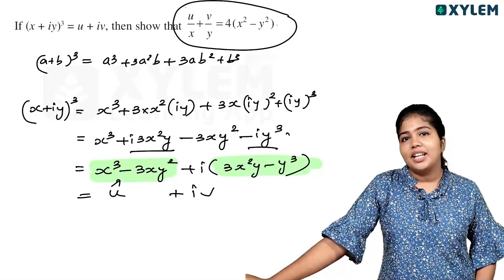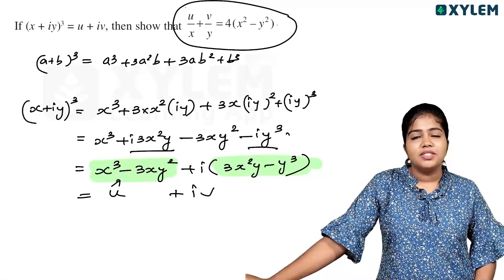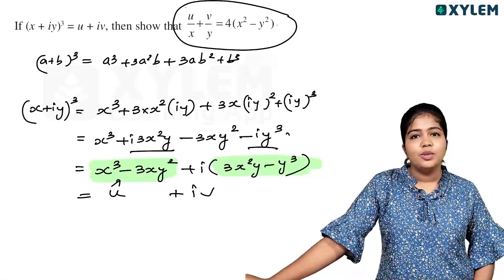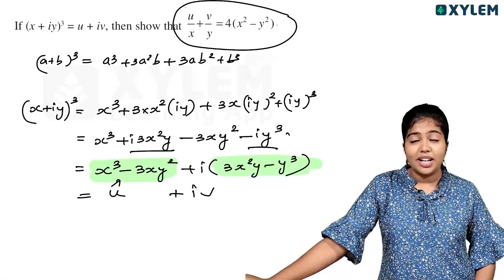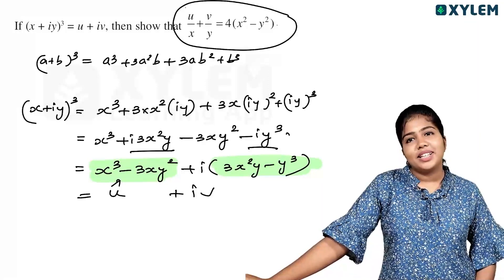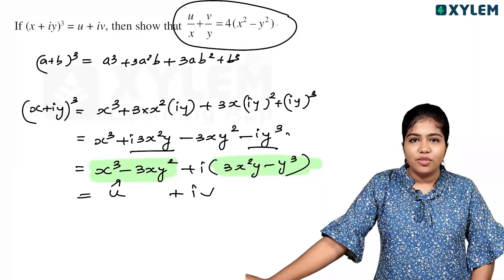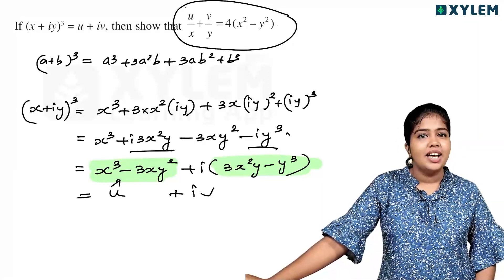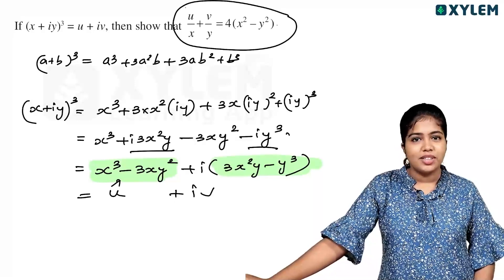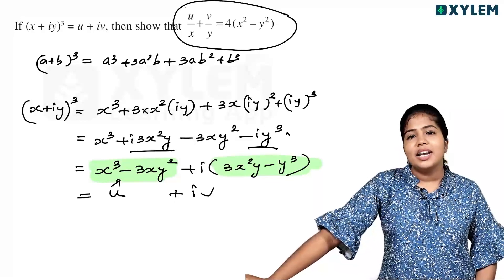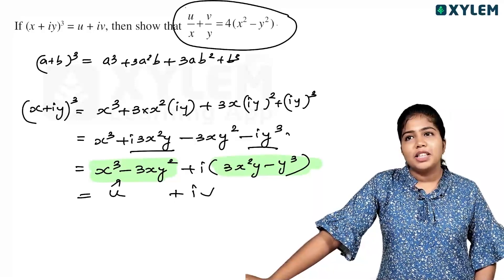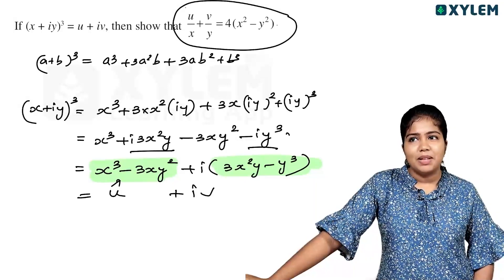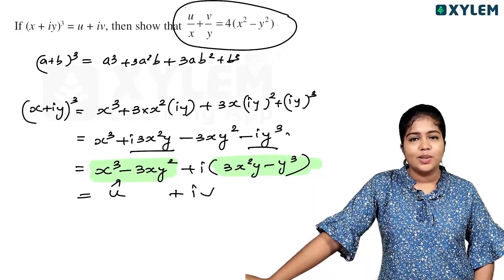To summarize key concepts: i squared equals minus 1, i cubed equals minus i, i to the fourth equals 1, and i equals root of minus 1. Remember the cyclic powers of i when solving these problems.